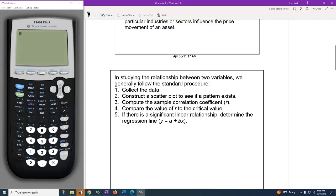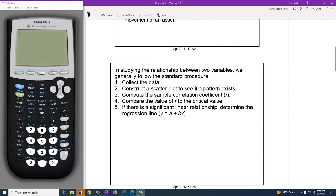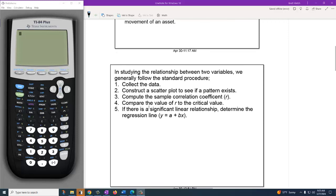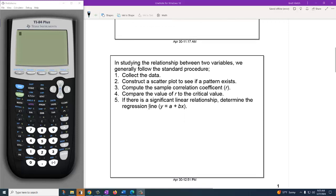But once we start to get a sense that there is a pattern, we would compute the sample correlation value r and compare that to the critical value. If and when there is a significant relationship, if one exists, then we're going to determine the relationship.